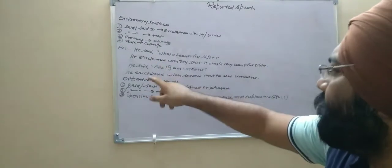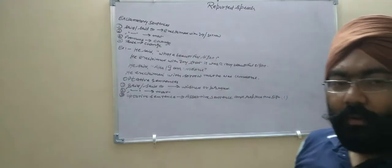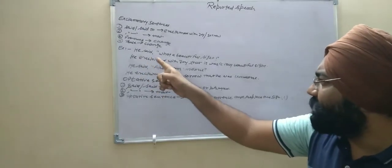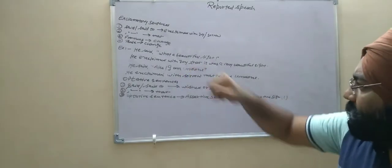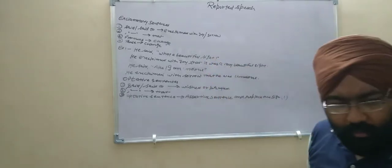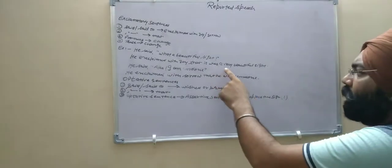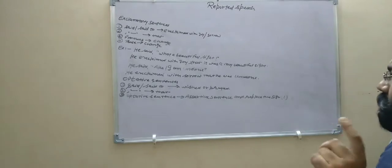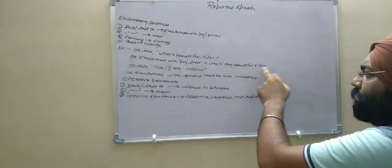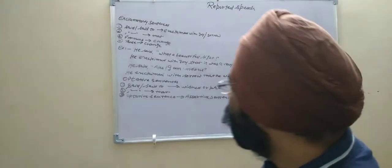For example, he said, what a beautiful sight. Here the sense of thing, it's very joyful, beautiful sight. So we say he exclaimed with joy that sight is a non-living thing, so we will put it was. Sight is present tense, so that's why I am putting it was. It was a very beautiful sight.